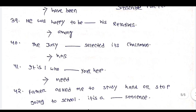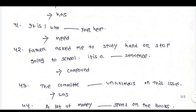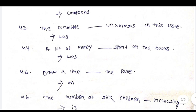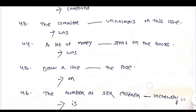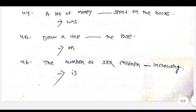The jury — the committee dash selected its chairman — has. It is I who dash your help — need. Father asked me to study hard or stop going to school — it is a compound sentence. The committee dash unanimous on this issue — was. A lot of money dash spent on the book — was. Draw a line dash the page — on the page. The number of six children dash increasing — is increasing.